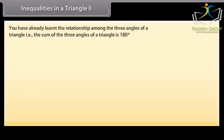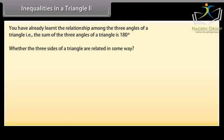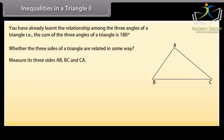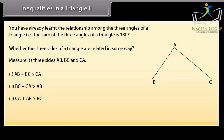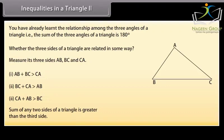Inequalities in a triangle 2. You have already learned that the sum of the three angles of a triangle is 180 degrees. We shall now study whether the three sides of a triangle are related in some way. Draw a triangle ABC and measure its three sides AB, BC and CA. We observe that: AB plus BC is greater than CA; BC plus CA is greater than AB; and CA plus AB is greater than BC. Thus, we conclude that the sum of any two sides of a triangle is greater than the third side.